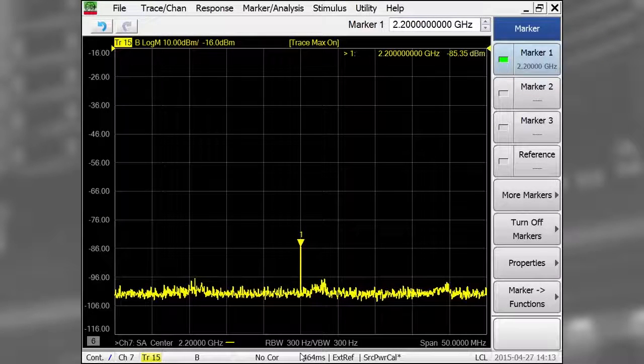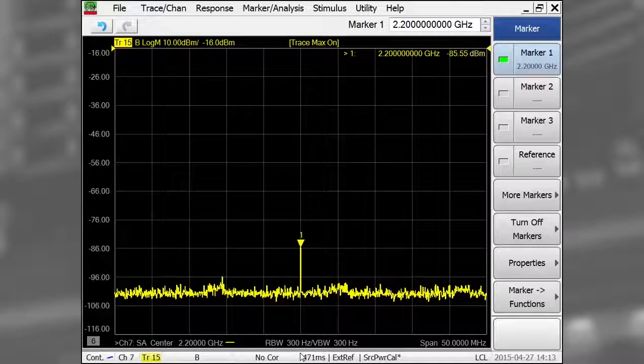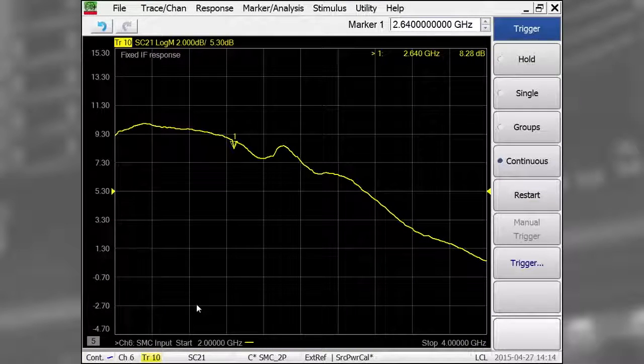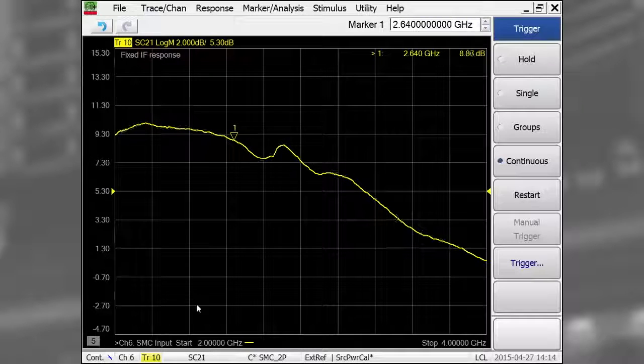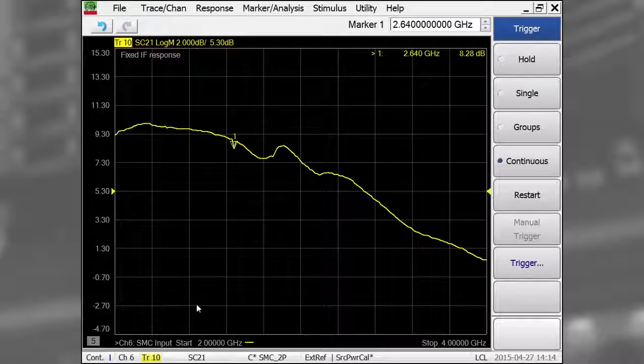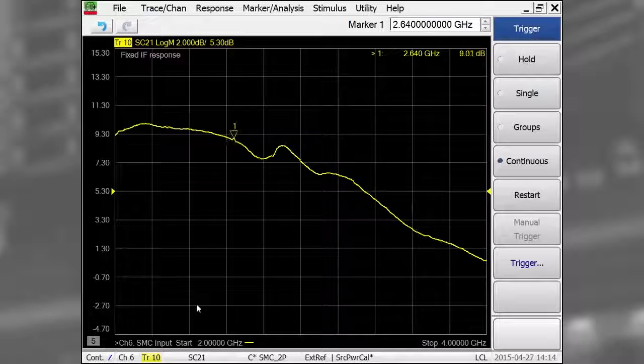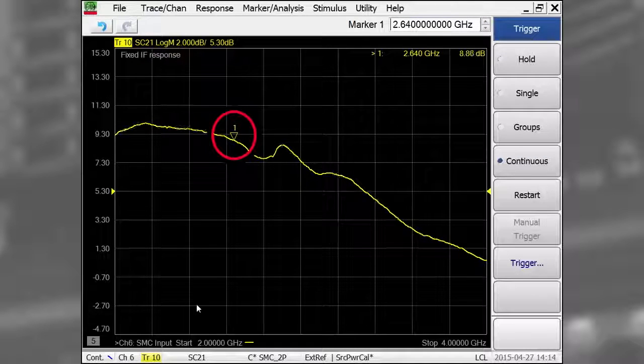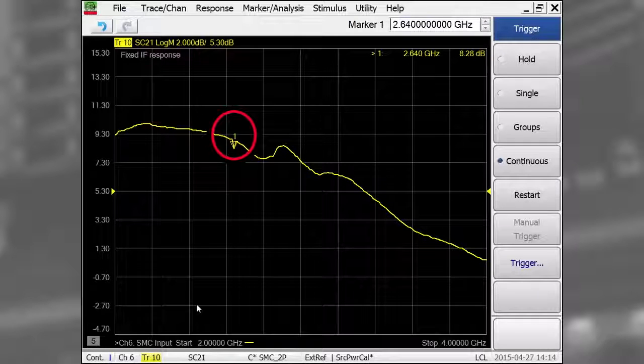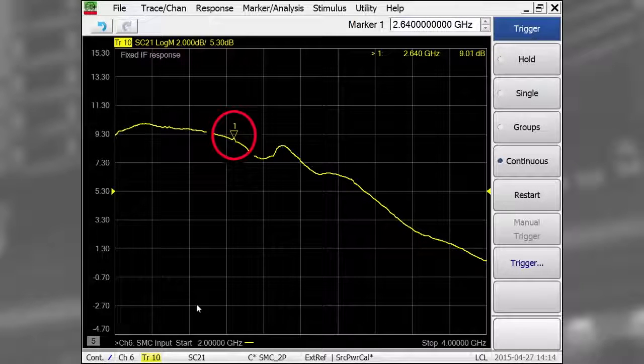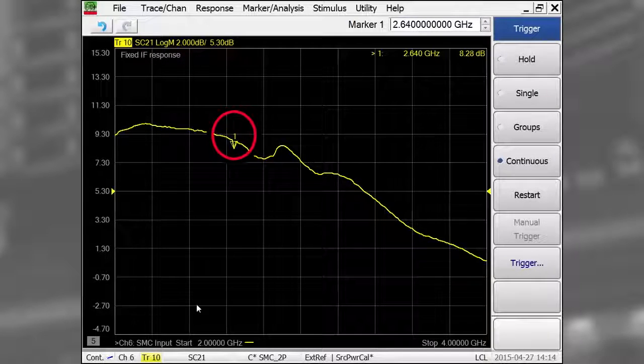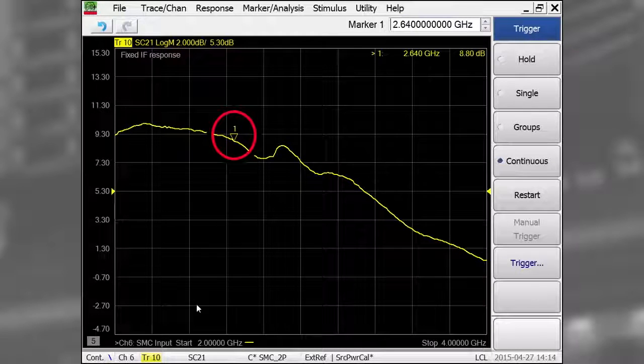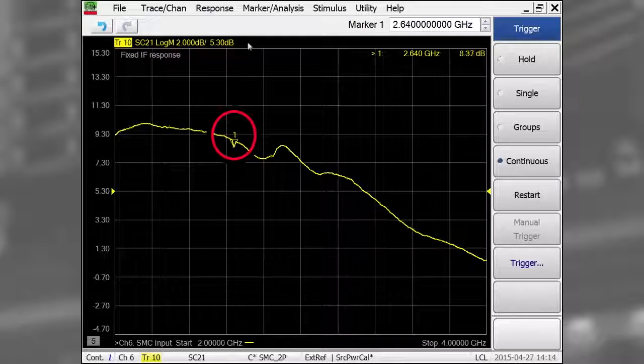Now, let's take a look at the fixed IF response of the converter, which is used to measure the front-end bandwidth. This response is generated by sweeping both the input and LO signals to the converter. This trace shows that at 2.64 GHz, there's a glitch that changes from sweep to sweep. These are usually caused by spurious signals landing at the same frequency as the desired signal, adding in and out of phase.